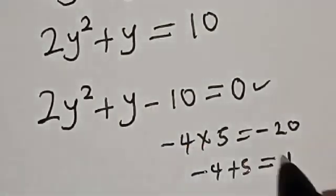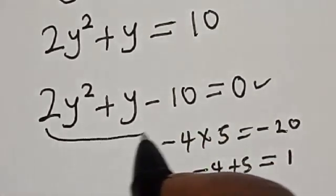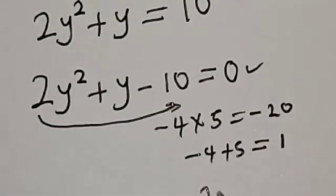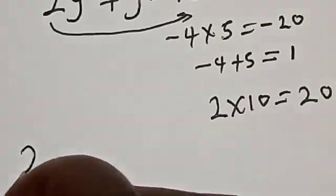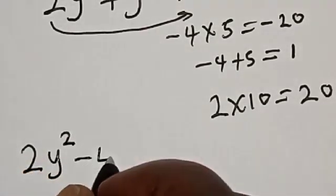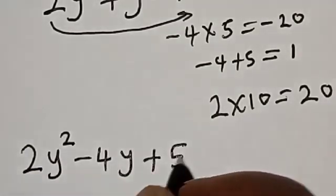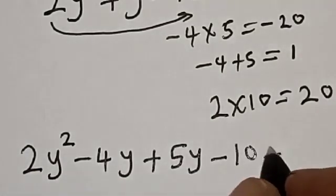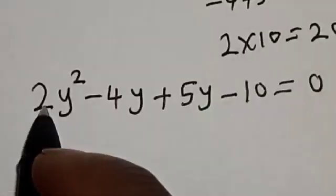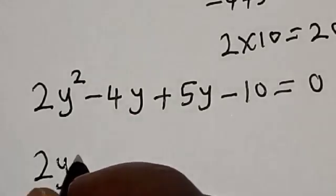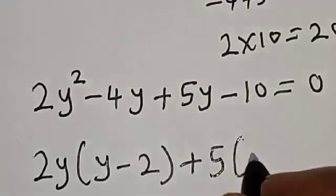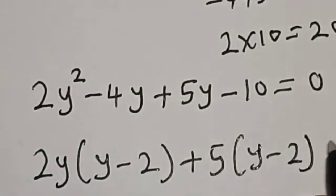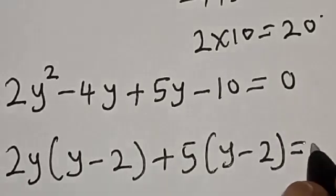Remember, the 20 comes from 2 multiplied by 10, that is 2 times 10 equals 20. Now let's substitute: we have 2y squared minus 4y plus 5y minus 10 is equal to 0. Factoring: 2y into y minus 2, plus 5 into y minus 2, is equal to 0.